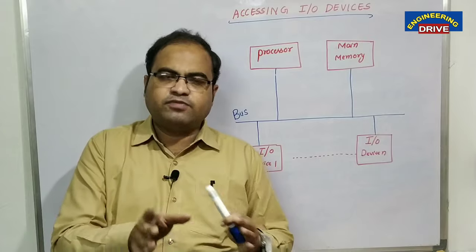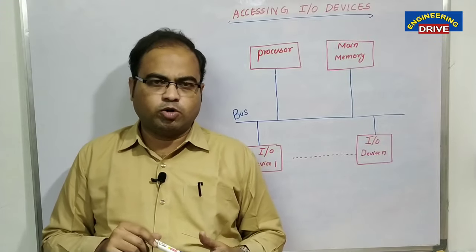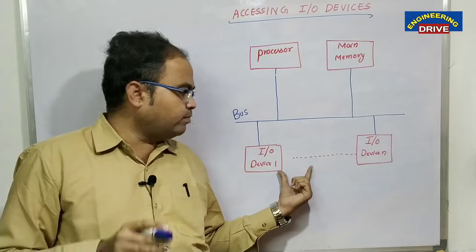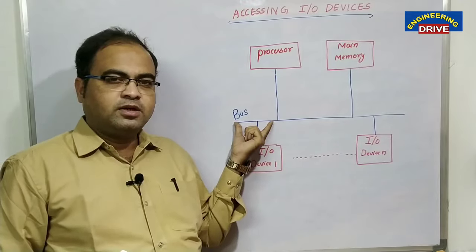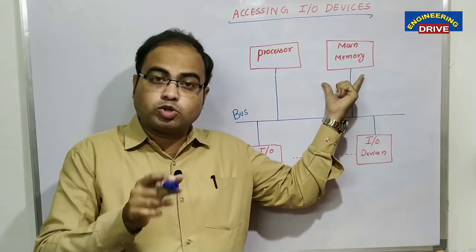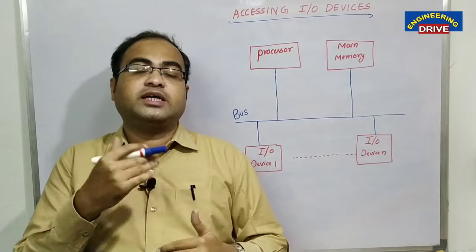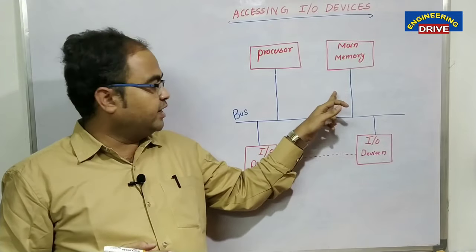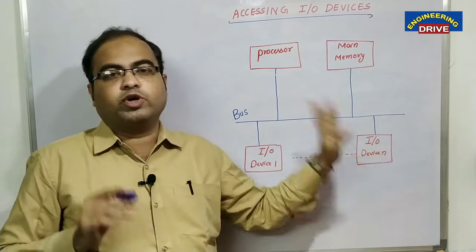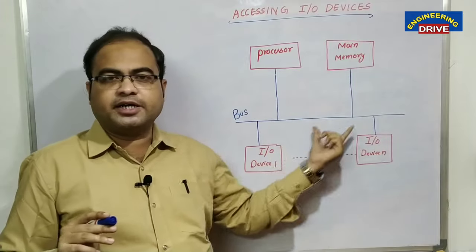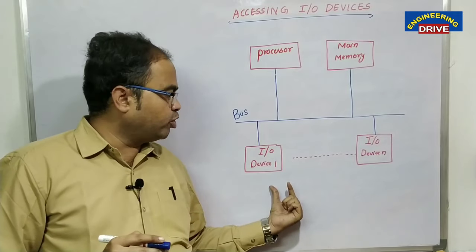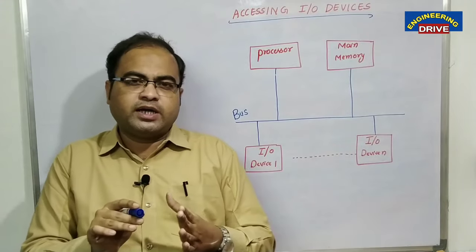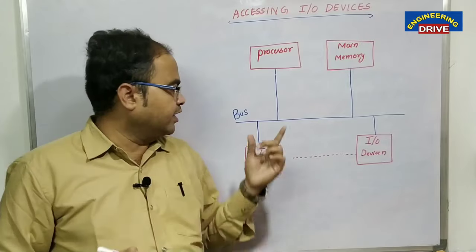If a user is typing something from the keyboard — keyboard is also an input device — that control from the input device will be passed to the processor with the help of a bus, and the processor will interact with main memory to store the data temporarily. If the user then wants to display the data on an output device such as a monitor, the data will be passed through the bus from main memory to the output device. So bus is a mediator in the communication between input output devices, the processor, and main memory.